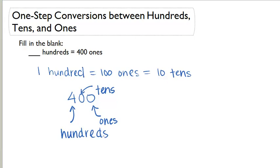Therefore, we know that we have 4. Four hundreds equals 400 ones.